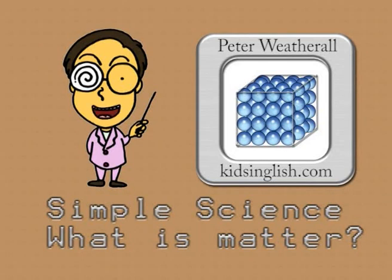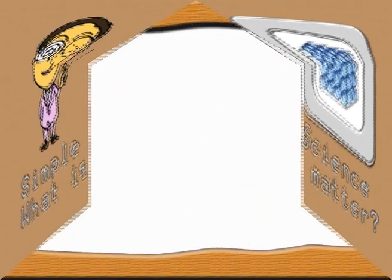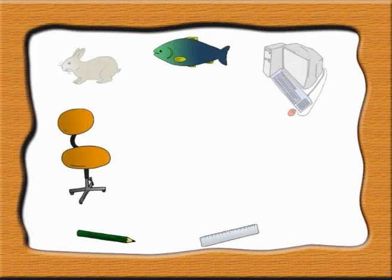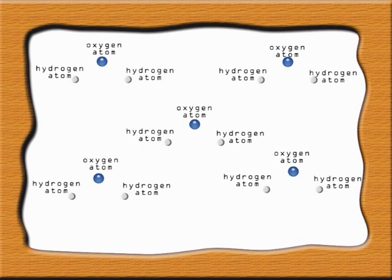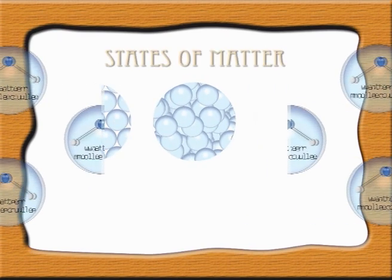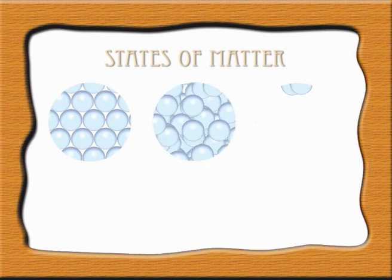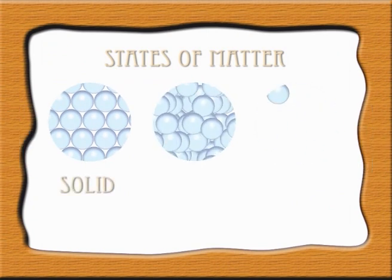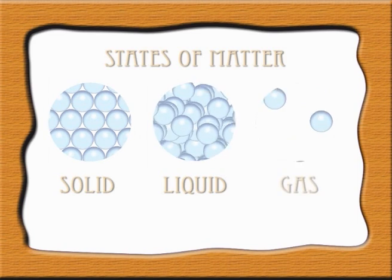Simple science. What is matter? All material objects around us are made up of atoms. Atoms join together to form molecules. And molecules bind together to form states of matter we know as solid, liquid, and gas.